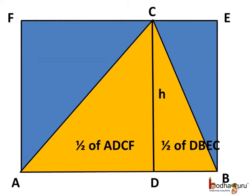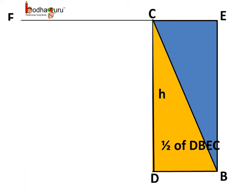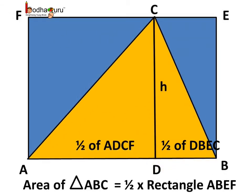If we observe carefully, the rectangle ABEF is divided into two rectangles: rectangle ADCF and rectangle DBEC. The area of triangle ADC is half the area of rectangle ADCF. Similarly, the area of triangle DBC is half the area of rectangle DBEC. So we can say, area of triangle ABC is equal to half the area of the whole rectangle ABEF.